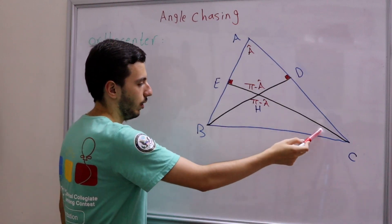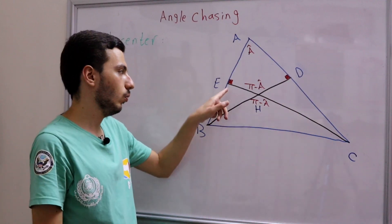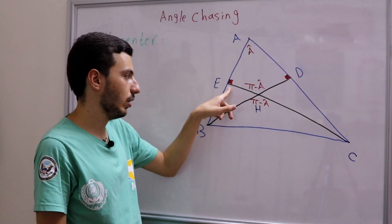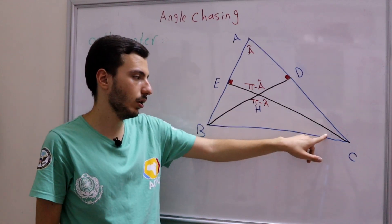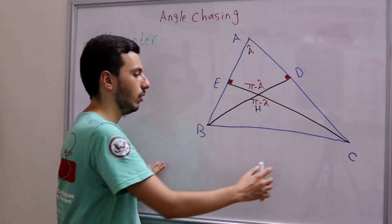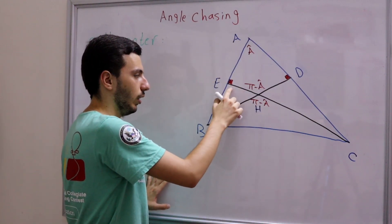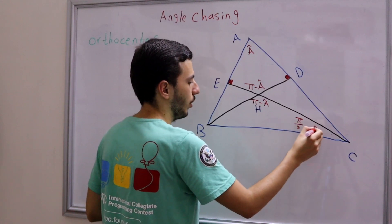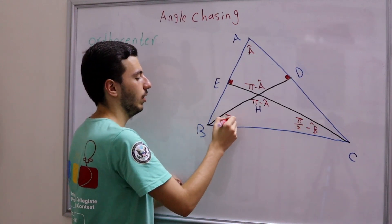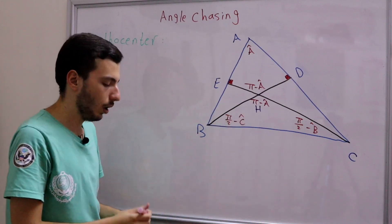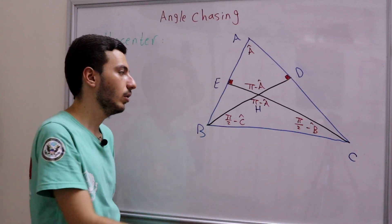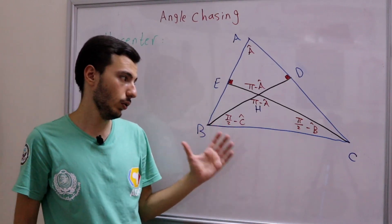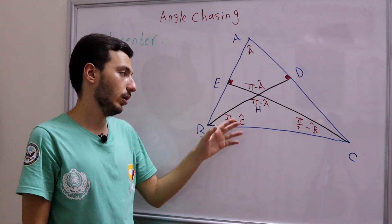What about the other angles? Take a look: this angle is 90 degrees, and this angle is B. Examining right triangle CBE, we get that this angle is π/2 minus B. In the same way, we can deduce that the other angle is π/2 minus C. So to summarize: angle BHC is π minus A, this angle is π/2 minus B, and this one is π/2 minus C.